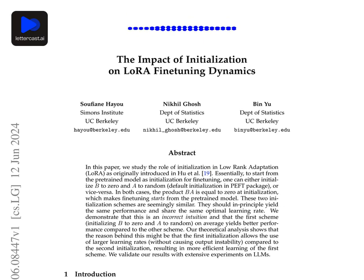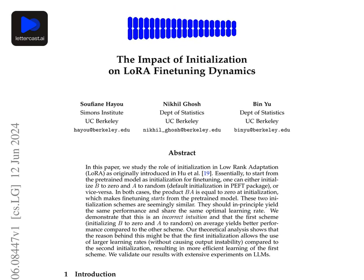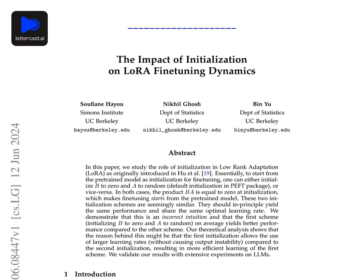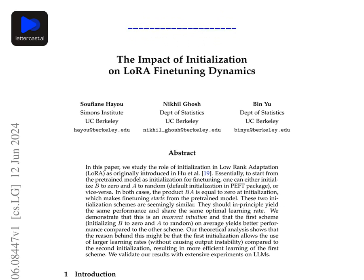Moving on to language model experiments, how do these findings validate the theoretical predictions? The experiments confirm that INIT-A generally leads to more efficient feature learning, supported by real-world task evidence, aligning well with the theoretical predictions. For GLUE tasks with RoBERTa, INIT-A led to better performance and larger optimal learning rates compared to INIT-B. For MNLI, there was a significant test accuracy difference, while for QNLI the optimal learning rate was similar. In LLaMA experiments, INIT-A resulted in larger optimal learning rates and lower test perplexity, and for LLaMA-7B on FLAN-V2, MMLU accuracy was slightly higher with INIT-A.